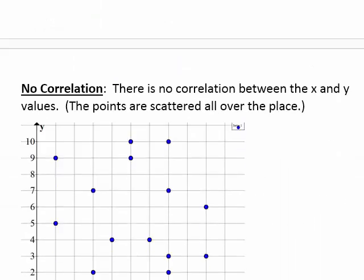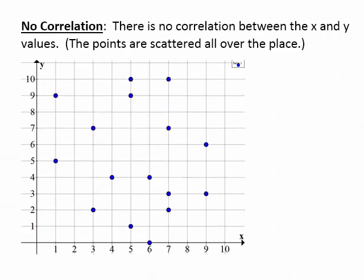Our last type of correlation is no correlation. There's no correlation between the x and y values if the points are scattered all over the place. In other words, you couldn't look at the points and say they're going up from left to right or going down from left to right, because they're just scattered all over the place on the graph.